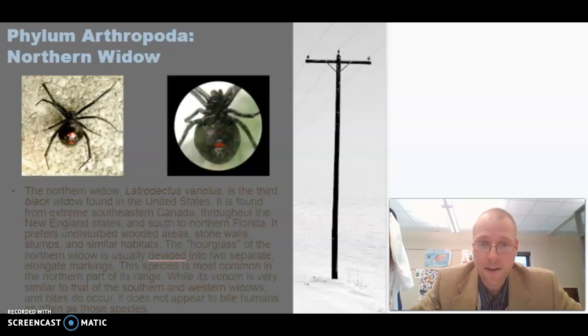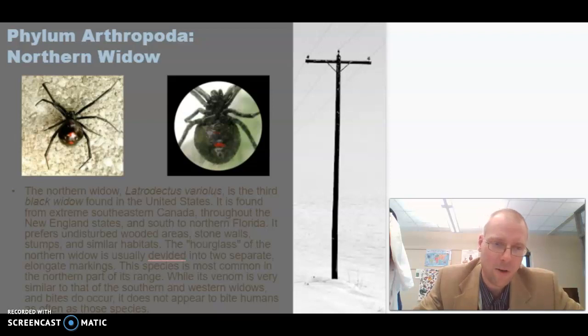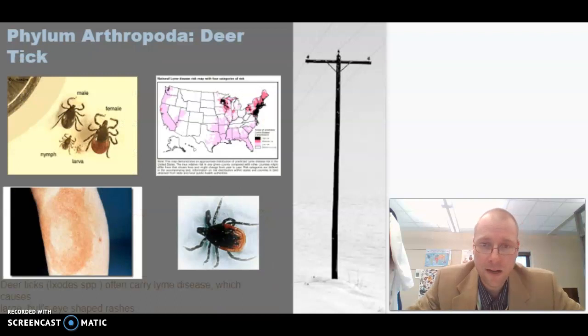Speaking of arachnids, in Michigan, we have the northern widow. It is a close relative of the black widow. And they are venomous, and they can cause death to humans. However, it doesn't seem to bite as often as its cousins, and we don't usually run into them too much.